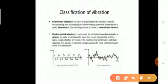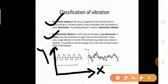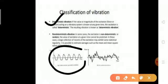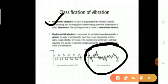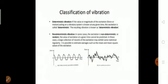In deterministic vibration, if we plot on an x-y axis, we get a common repeating pattern of vibration at regular time intervals, which allows us to easily find frequency, amplitude, and other parameters. In random or non-deterministic vibration, the pattern is irregular with no common repeating form, making it very difficult to determine the vibration parameters. This completes the classification of vibrations.